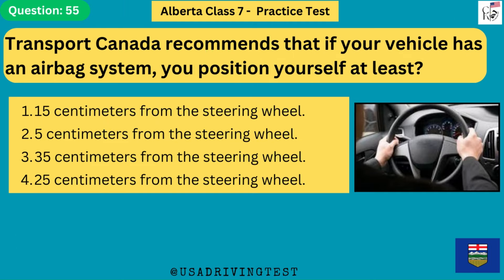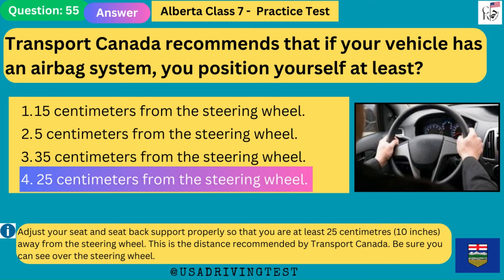Transport Canada recommends that if your vehicle has an airbag system, you position yourself at least: 1. 15 centimeters from the steering wheel. 2. 5 centimeters from the steering wheel. 3. 35 centimeters from the steering wheel. 4. 25 centimeters from the steering wheel. The answer is 4: 25 centimeters from the steering wheel. Adjust your seat so that you are at least 25 centimeters (10 inches) away from the steering wheel — the distance recommended by Transport Canada. Be sure you can see over the steering wheel.